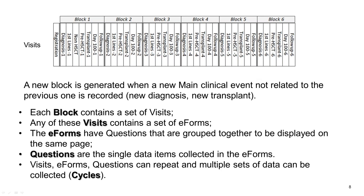Each block contains a set of visits; any of these visits contains a set of e-forms, which are grouped together to be displayed on the same page; and questions are the single data items collected in the e-forms. E-forms and questions can repeat, and those are cycles. This is important to understand for what we will explain later.